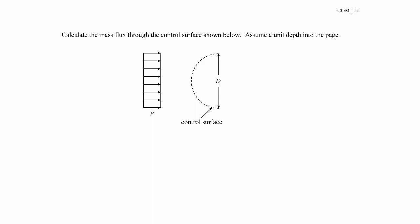In this example, we're asked to calculate the mass flux through the control surface shown here. It's half a cylinder. We're told to assume it's unit depth into the page. I'll just say it's distance w into the page. Let me make a change there. Assume a depth w into the page.